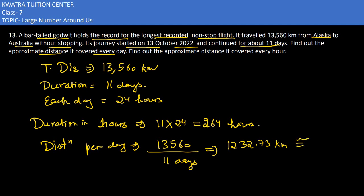And if we write approximately, we round off this value. The digit after the decimal is 7, so we round up — the approximate distance per day is 1,233 km.